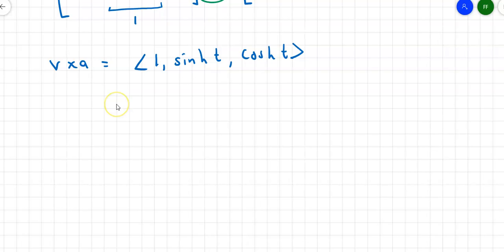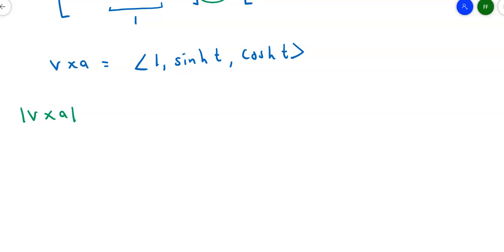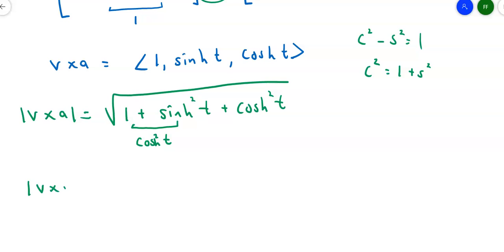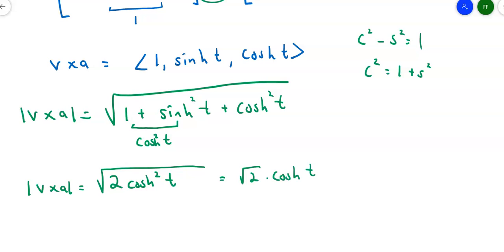The magnitude of V × A is the square root of 1² + sinh²t + cosh²t. Using the identity cosh²t = 1 + sinh²t, we get 1 + sinh²t + cosh²t = cosh²t + cosh²t = 2 cosh²t. So the magnitude of V × A = √(2) · cosh t.